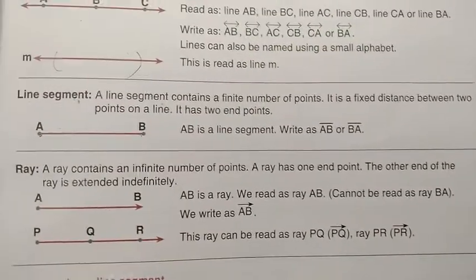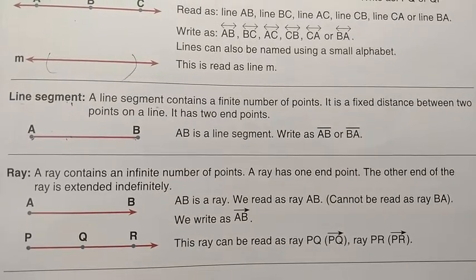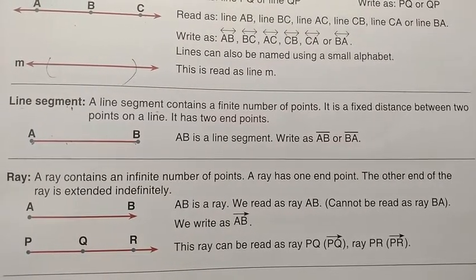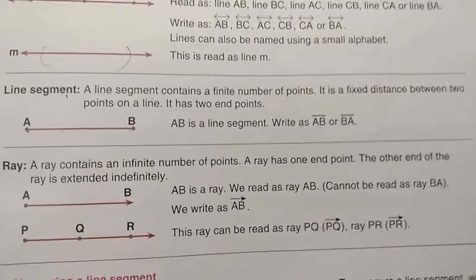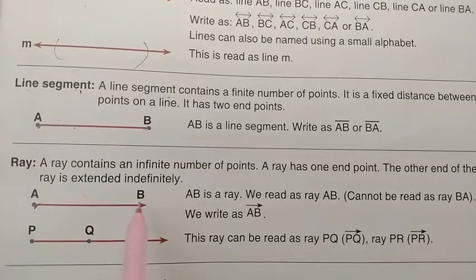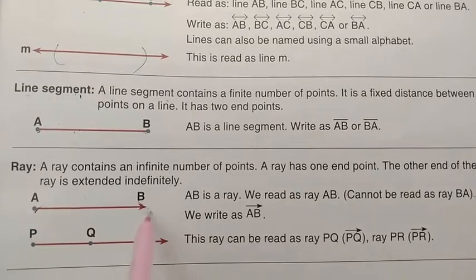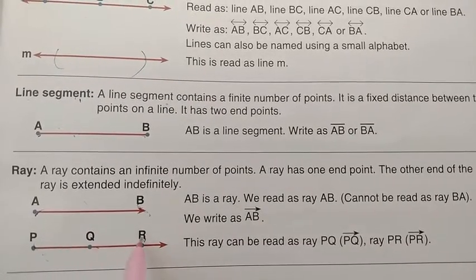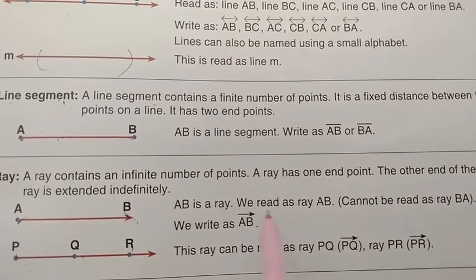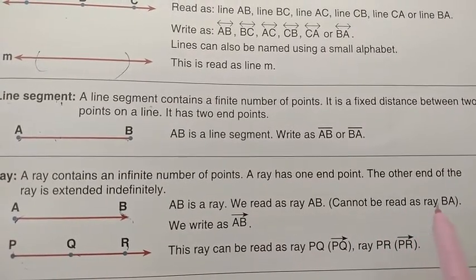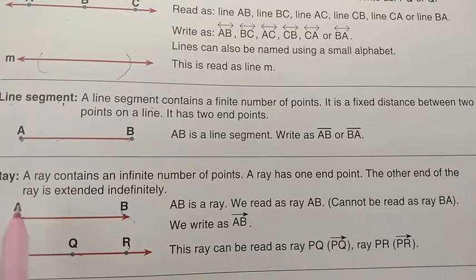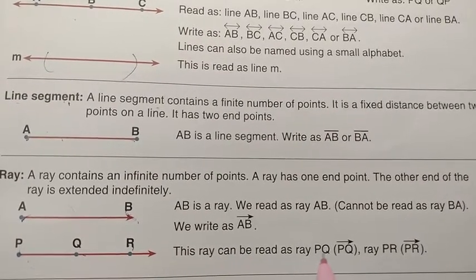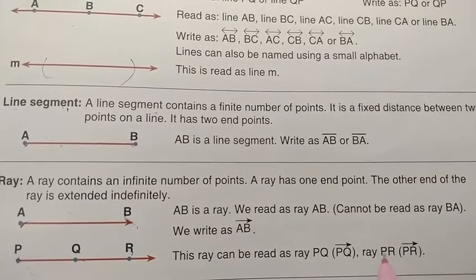Next, ray. A ray contains an infinite number of points. A ray has 1 end point — the other end is extended indefinitely. See here — 1 end point and 1 side extends indefinitely. This is a ray. Ray PR and ray QR. See here — AB is a ray. We read as ray AB. Cannot be read as ray BA — only read as ray AB. Ray PQ and ray PR are denoted with a one-directional arrow above.